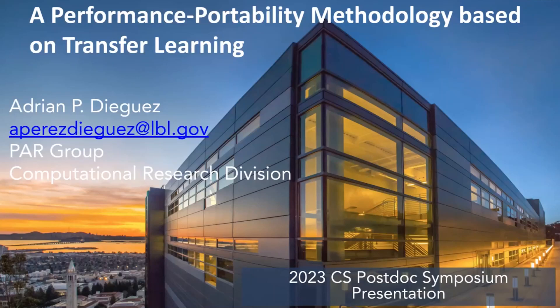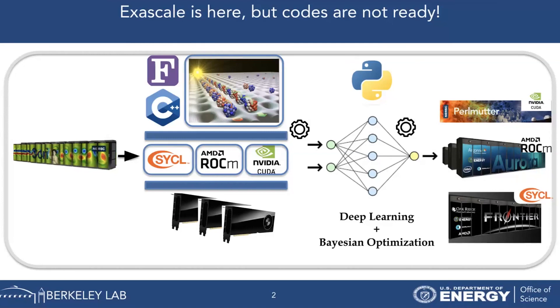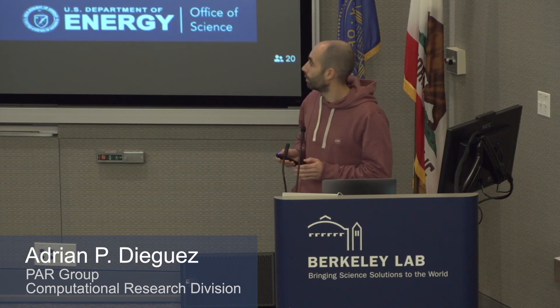I wanted to give you the big picture of my research. Starting from left to right, our collaborators were securing their large-scale applications on the previous generation of DOE supercomputers, like Cori, and now they want to target the new generation of exascale supercomputers. In the exascale, most acceleration comes from the use of GPUs, so they need to extend their codes with GPU offloading.